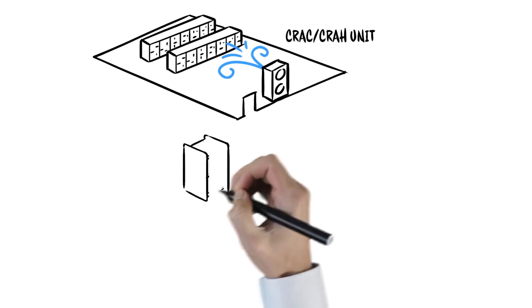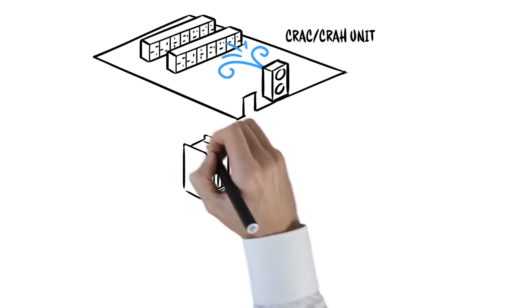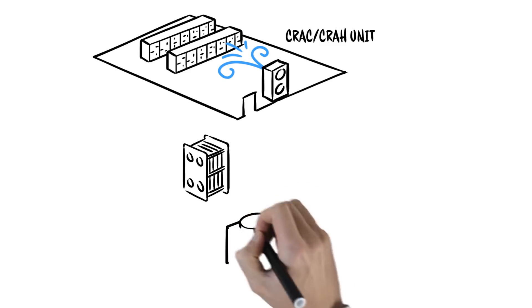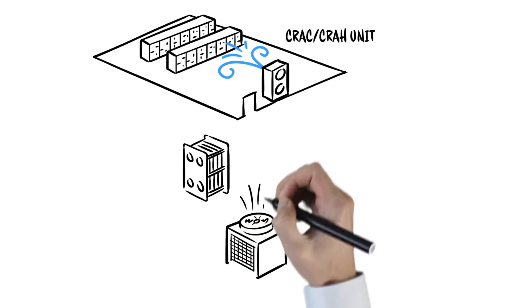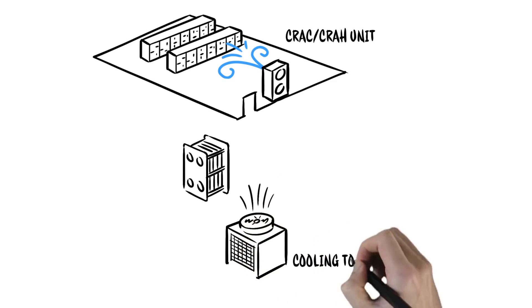But when it comes to minimizing your energy consumption and environmental impact, we can't just focus on the white space. We also need to look here, in the utility area, on the system that supplies cooling media to the white space.